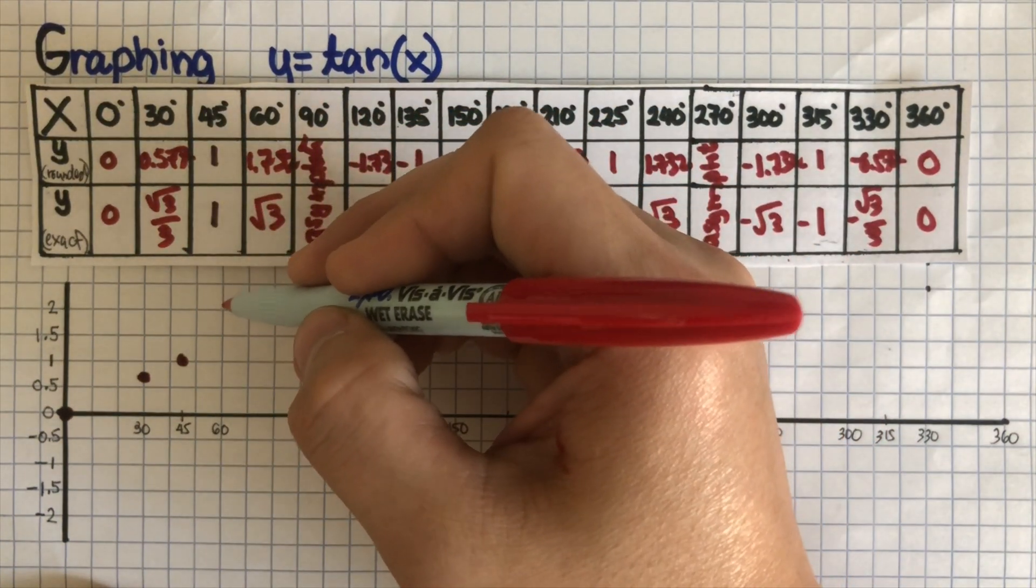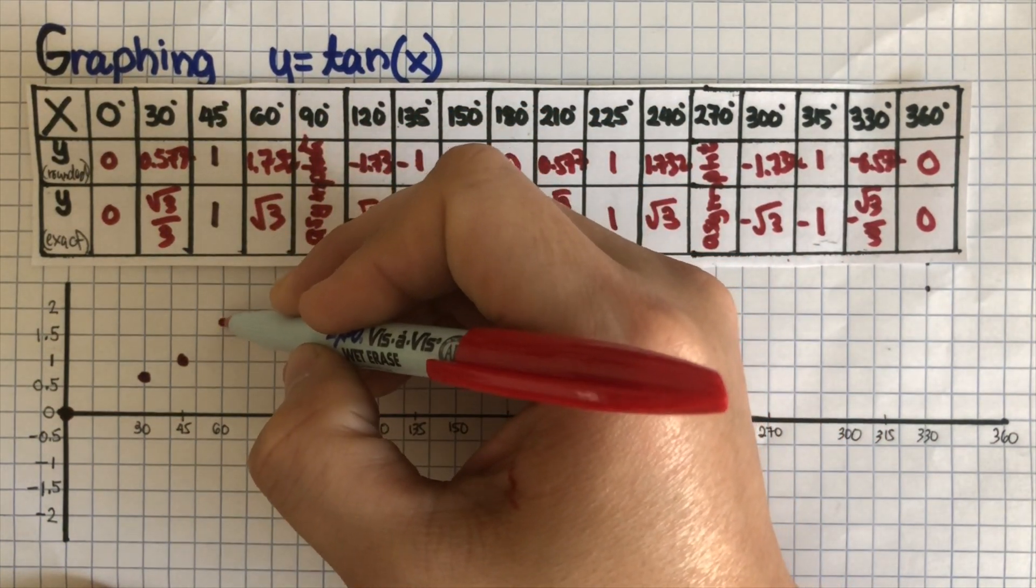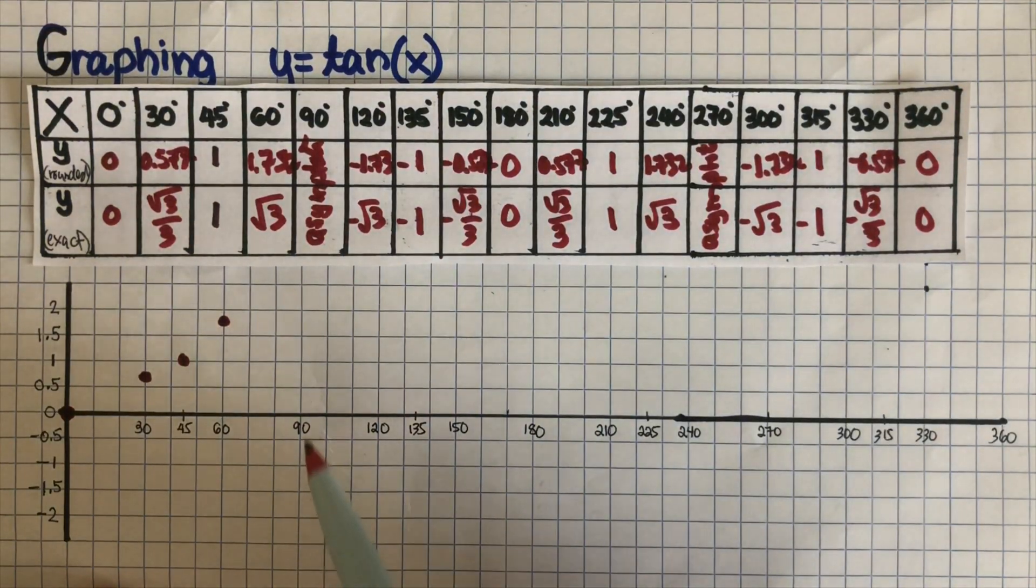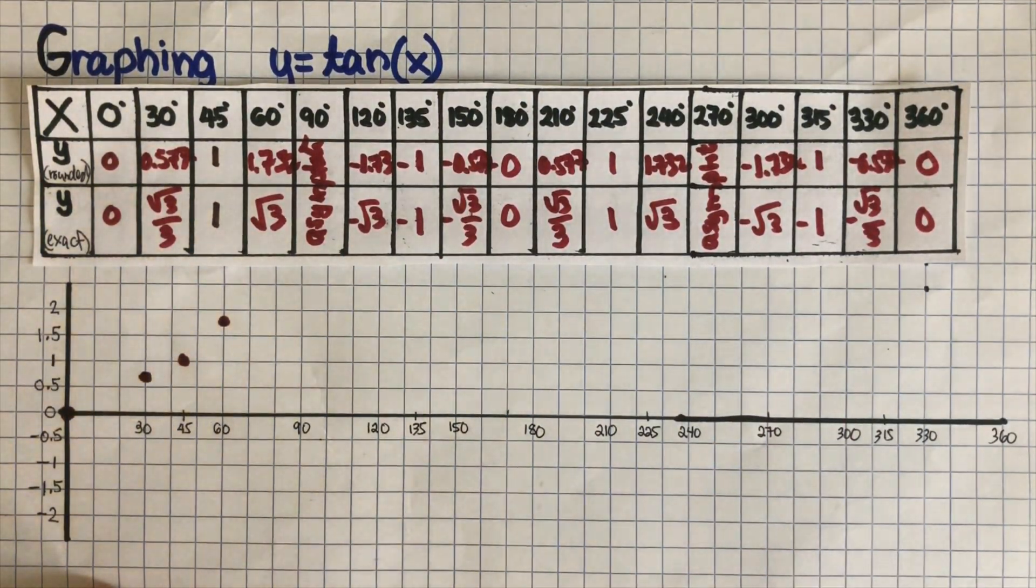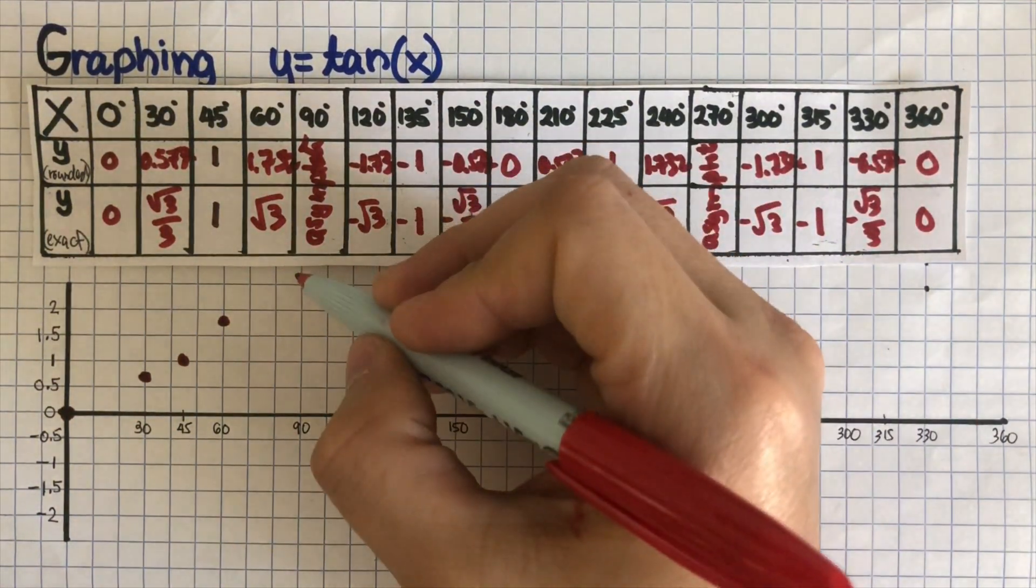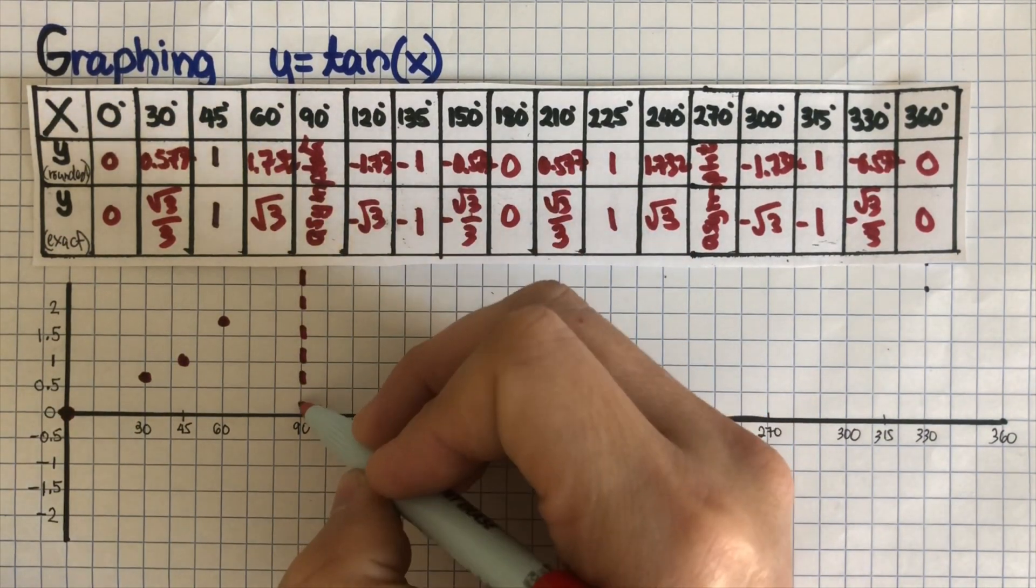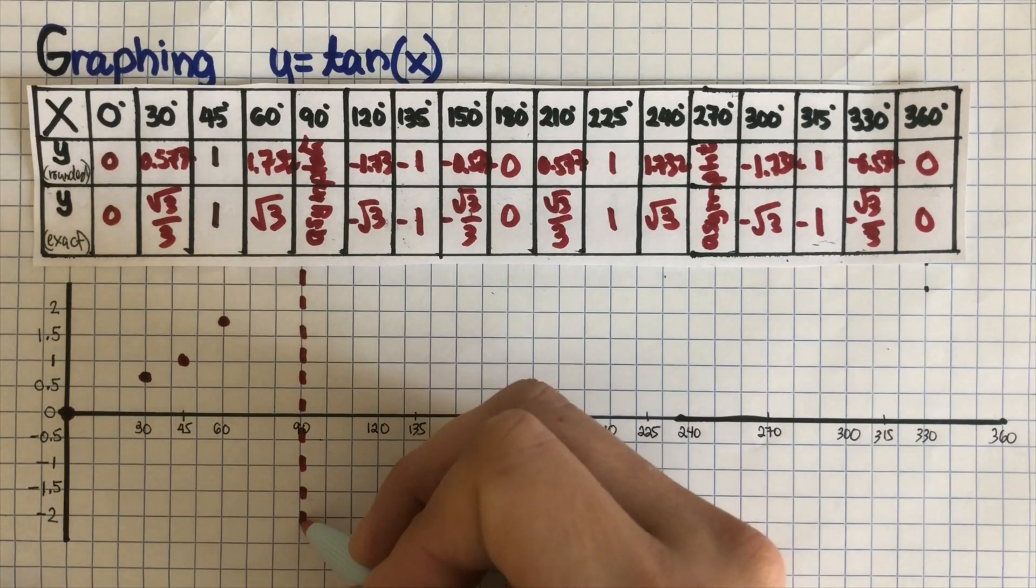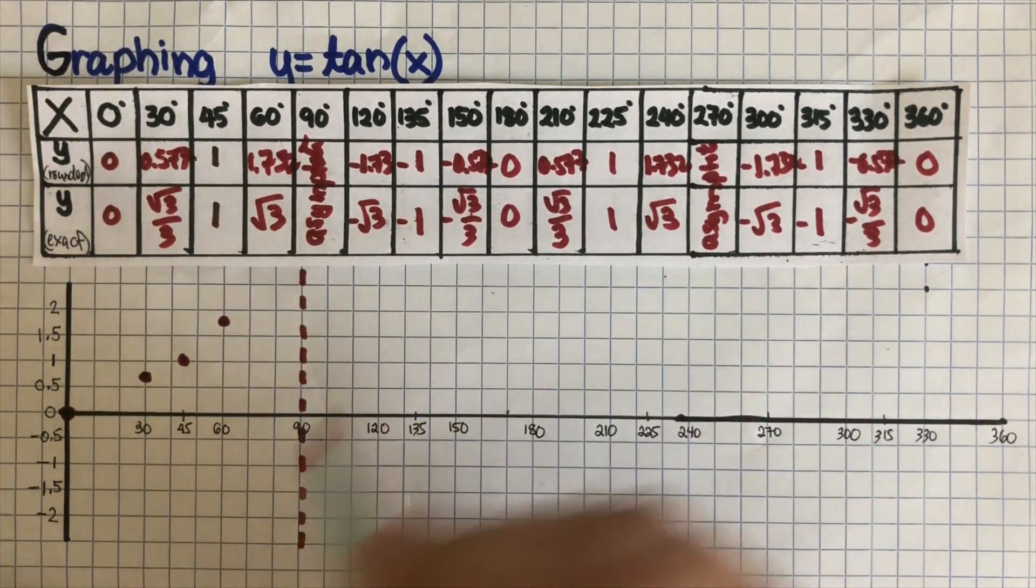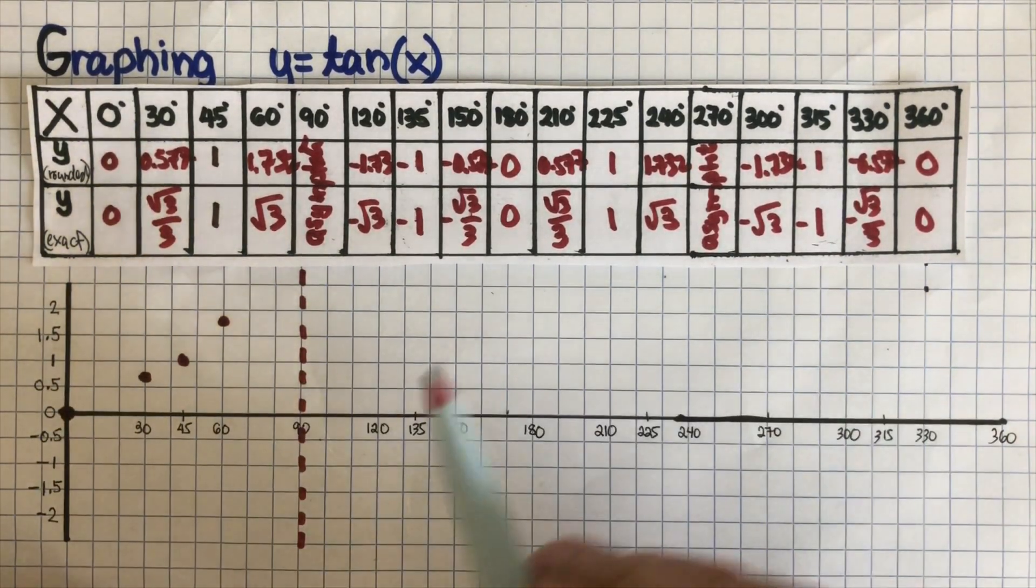So 1.7 should be somewhere around here for 60. And then 90 is an asymptote. Remember, if it's an asymptote, it is broken lines. I'm going to draw a broken line at 90.